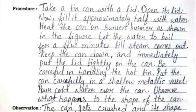Take a tin can with a lid and open its lid. Fill it approximately half with water. Heat the can on a Bunsen burner as shown in the figure. Let the water boil for a few minutes till steam comes out.